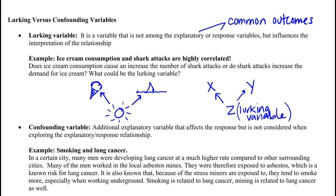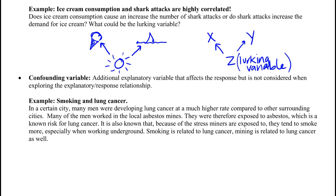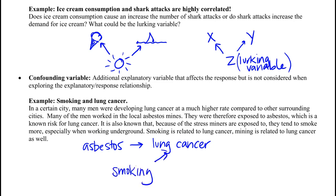We have an example here about smoking and lung cancer. In a certain city, many men were developing lung cancer at a much higher rate, and it turned out a lot of the men in that city worked at the local asbestos mine. We all know asbestos is bad, so maybe there's a link — maybe asbestos is influencing the lung cancer. But looking into it more, because of the stress they were exposed to, they tended to smoke more, and we also know smoking is associated with lung cancer. If smoking wasn't originally considered, that's what a confounding variable is — we would attribute all the increase in lung cancer risk to just working in the asbestos mines, when really it's probably divided between the two.